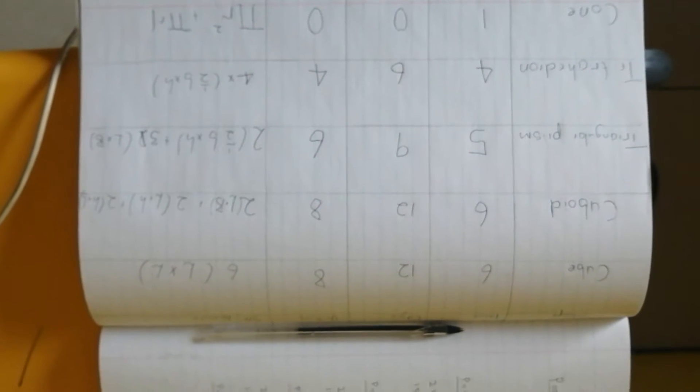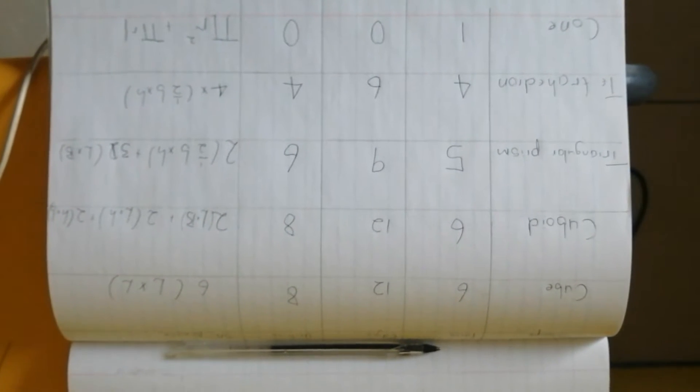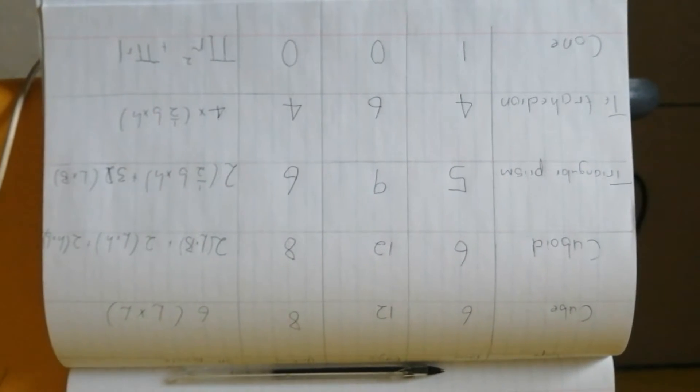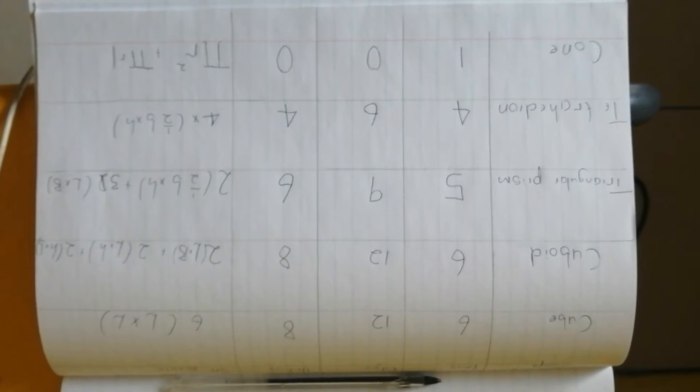For the surface area of a cube, I took the area of a square — because its faces are squares — which is length times length, and multiplied it by 6, which is the number of faces.